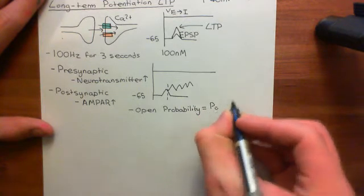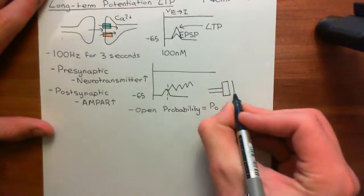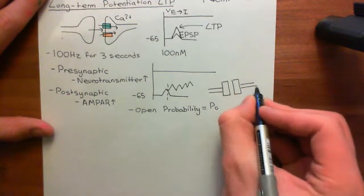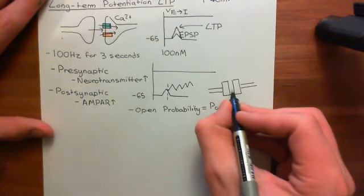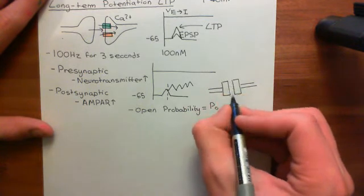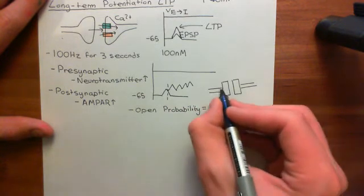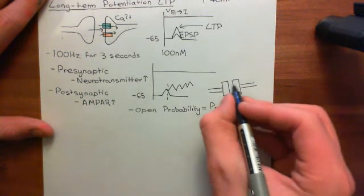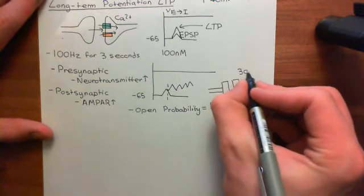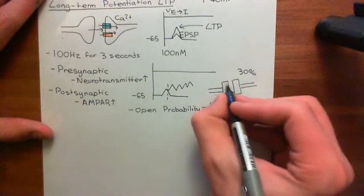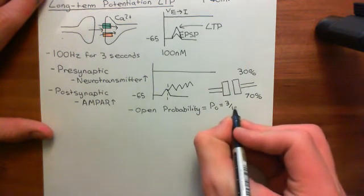To say this simply: if we've got an AMPA receptor that has got four glutamate molecules bound to it, it will spend a certain fraction of its time in the open state, and a certain amount of time in the closed state — or in a state that has a closed pore. The open probability is the probability that you will find it in the open state, i.e., the fraction of time it spends there. Let's say it spends 30% of its time in the open state when glutamate is bound, and 70% in a closed state — therefore the open probability would be 0.3.